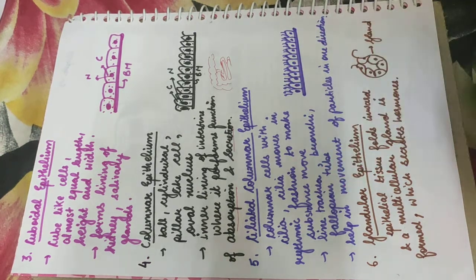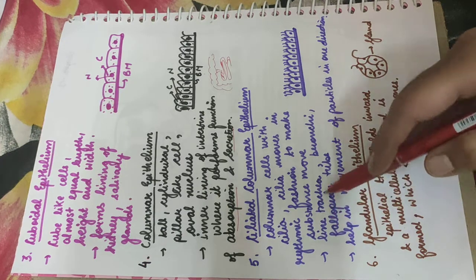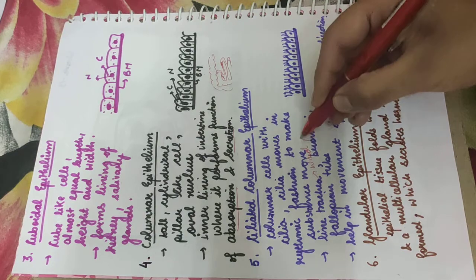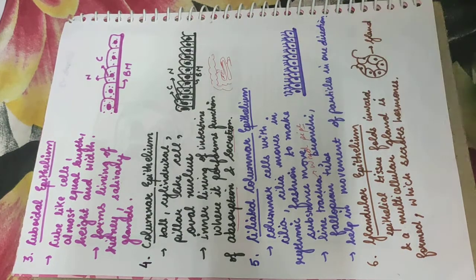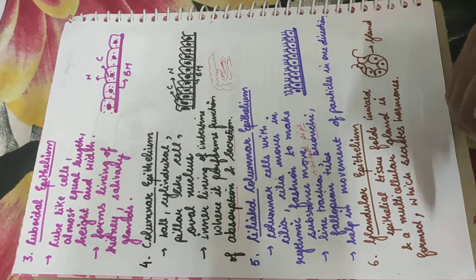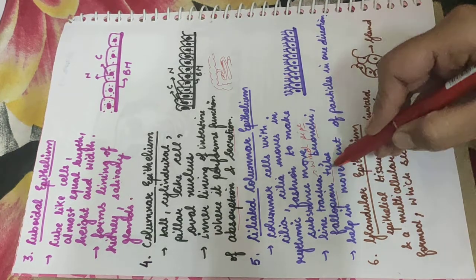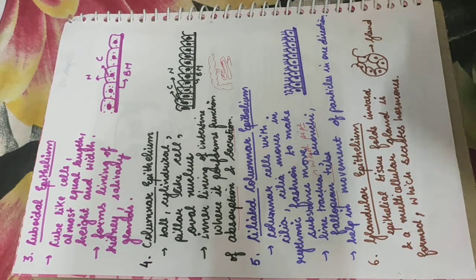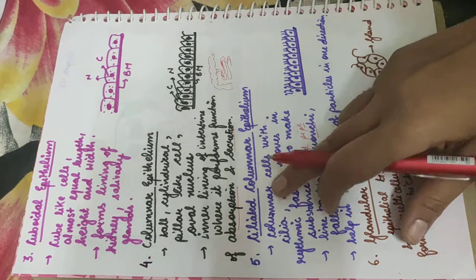These cells are present in the lining of the trachea, which is our windpipe. They are also in the bronchi, which is part of our respiratory system, and in the fallopian tube, which receives the female gamete in the female reproductive system and helps in ciliated movement.